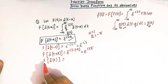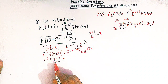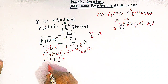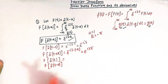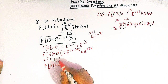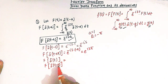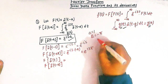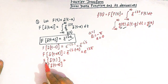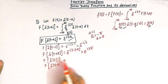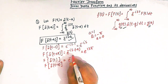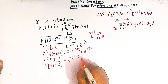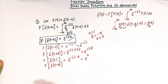Now the Fourier transform of delta of t: delta of t can be written as delta of t minus 0, so the value of a is zero. The Fourier transform of delta of t is given by taking a equal to 0, so we have e raised to minus i s times 0, that is e raised to 0, which equals 1.